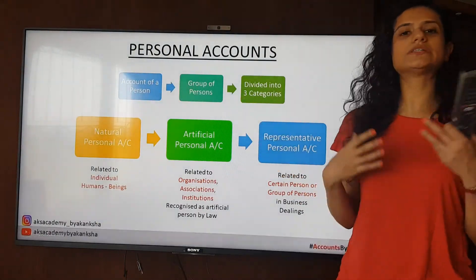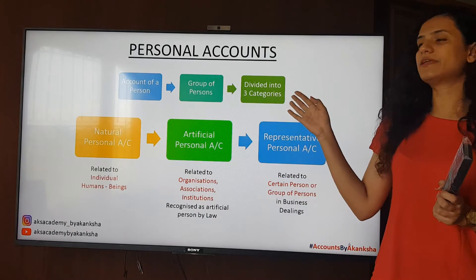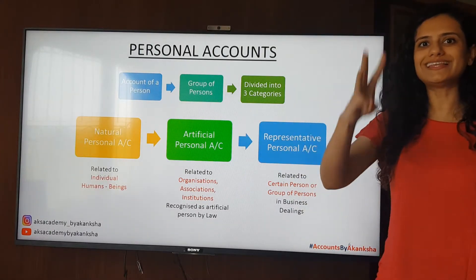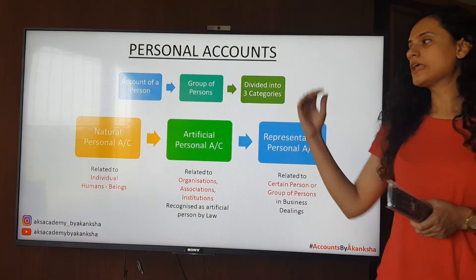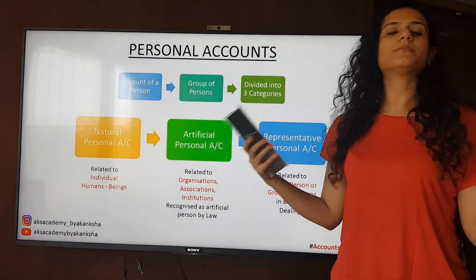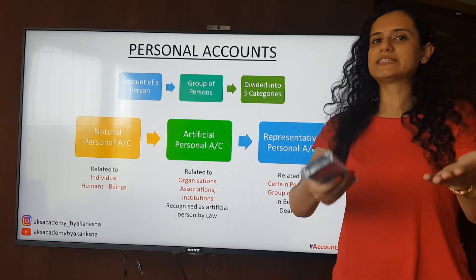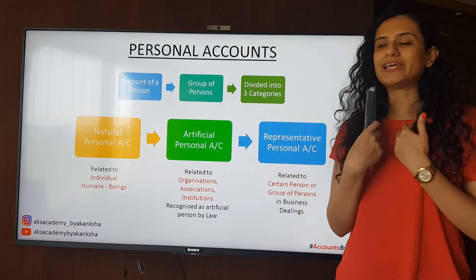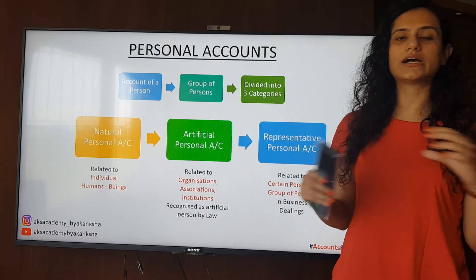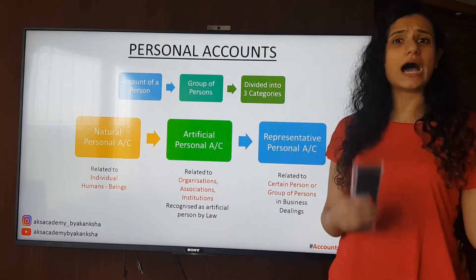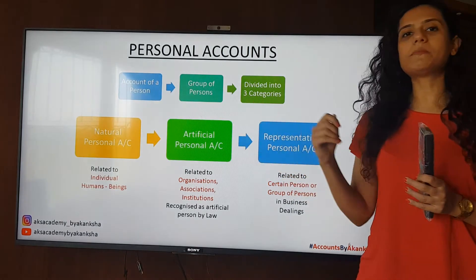Personal accounts are accounts of a person or group of persons, divided into three categories: natural personal account, artificial personal account, and representative personal account. Natural personal accounts refer to anyone and everyone — like you and me. For example, if my name is Akamsha, then it is Akamsha's account. It can also be mother's account, father's account, sister's account, brother's account, Ram's account, Sham's account. Anyone who is living — their account will be a natural personal account.